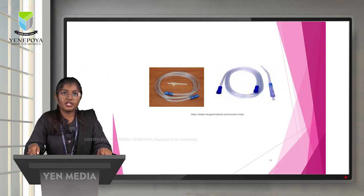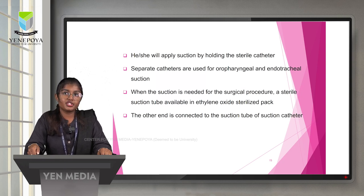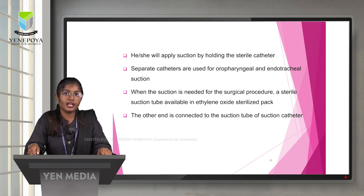The anesthetist applies suction by holding the sterile catheter. Separate catheters are used for oropharyngeal and endotracheal suction. When suction is needed for a surgical procedure, a sterile suction tube available in an ethylene oxide sterilized pack is used, with the other end connected to the suction tube or catheter.